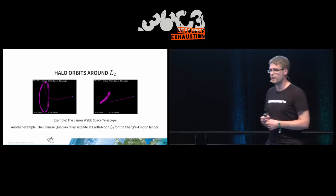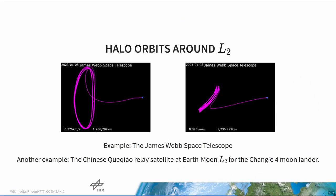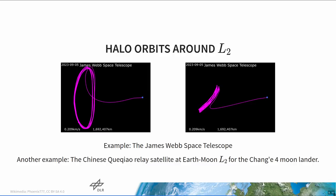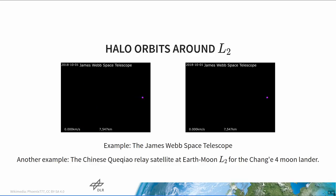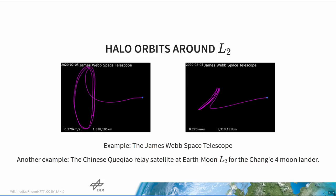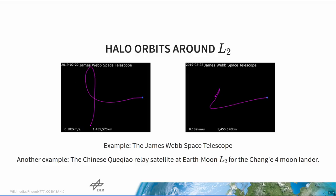Another example that has become pretty famous recently is the Chinese Queqiao relay satellite. This one sits at the Earth-Moon L2 Lagrange point. The reason is that the Chinese wanted to — and actually did — land the Chang'e-4 moon lander on the far side of the Moon. In order to stay in radio contact with the lander, they had to put a relay satellite behind the Moon which they could still see from Earth, and they chose a similar halo orbit around L2.